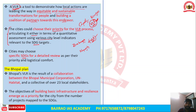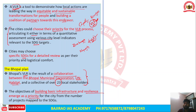Bhopal's Voluntary Local Review is actually the result of collaboration between the Bhopal Municipal Corporation and UN-Habitat, along with 23 local stakeholders. The top priority of the Bhopal Municipal Corporation is building basic infrastructure and resilience. The Bhopal administration has also mapped a number of projects under SDGs, including SDG 11 – Sustainable Cities and Communities.